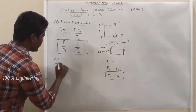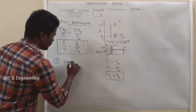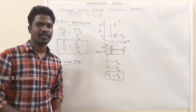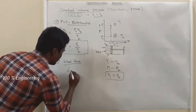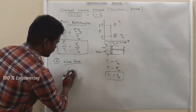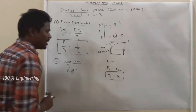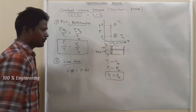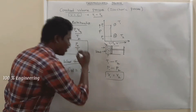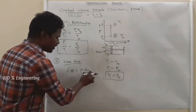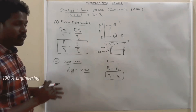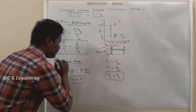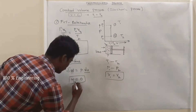The second thing we have to consider is work done. What is the work done during this constant volume process? We know the mathematical expression for work done is P dV. When there is a change in volume, there will be work done. Here, there is no change in volume, so the work done during the process will be zero. Work done during the process from state 1 to 2 will be zero.